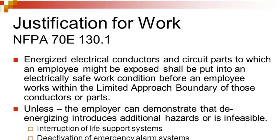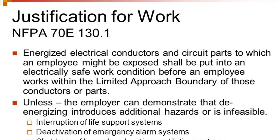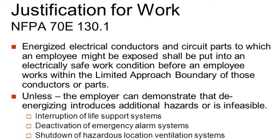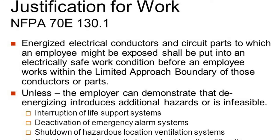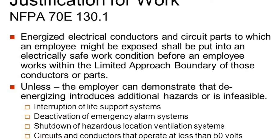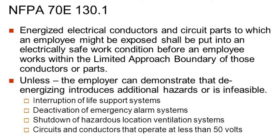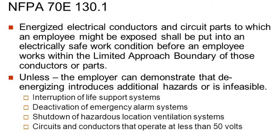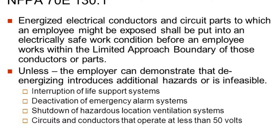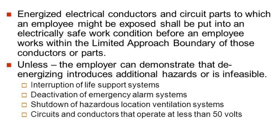Energized work shall be permitted where the employer can demonstrate that de-energizing introduces additional hazards or increased risk. Before authorizing energized work with the justification of a greater hazard, consideration should be given to the result of an incident that may occur — not only would equipment failure present the greater hazard, but the equipment could be inoperable for considerably longer than during a scheduled outage. For example, if life support equipment must be worked on while energized, there must be an alternative plan if an incident renders it inoperative. Another example is a hazardous area ventilation system that depends on electrical power, but where temporary ventilation may be available.